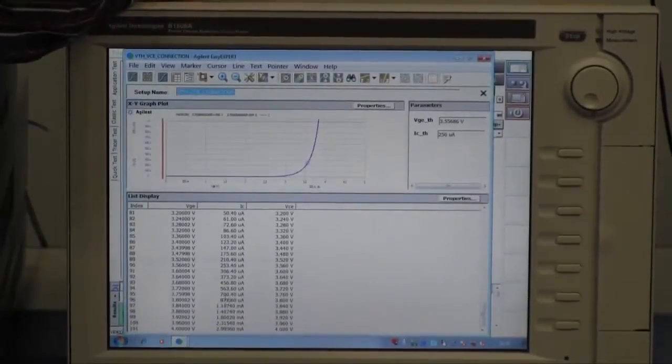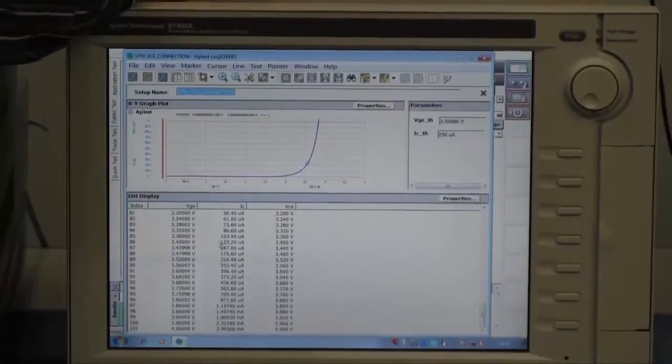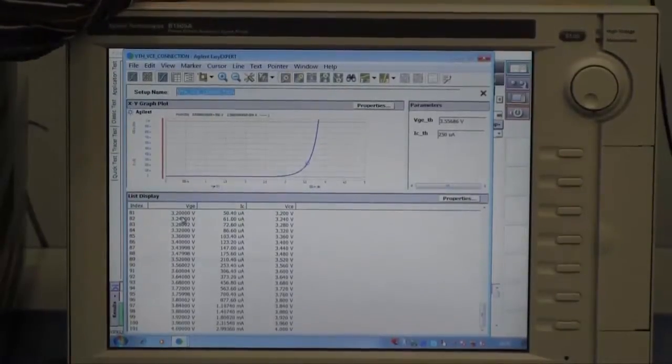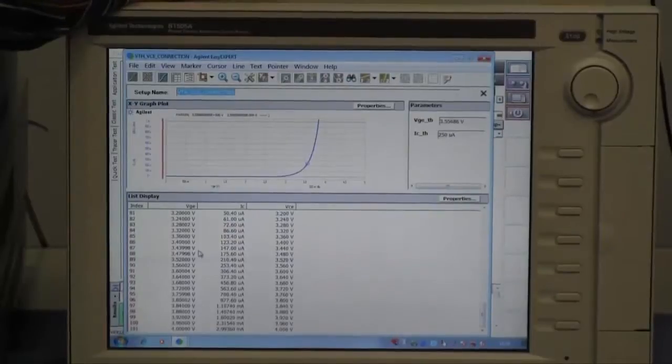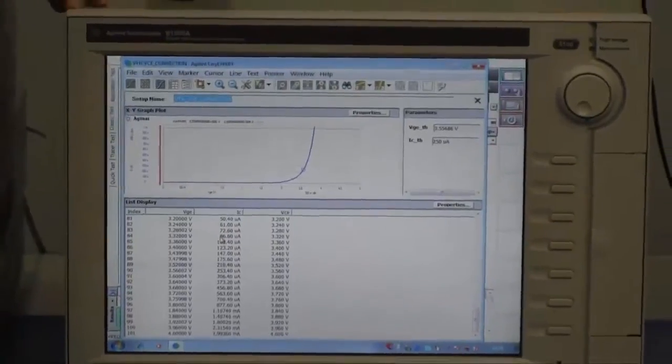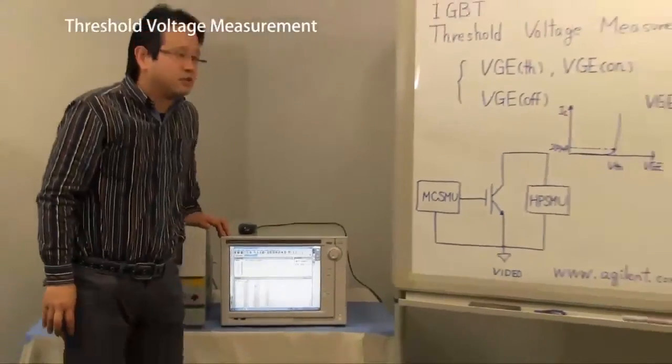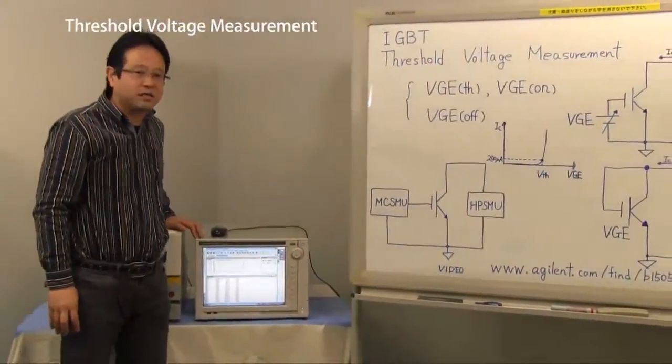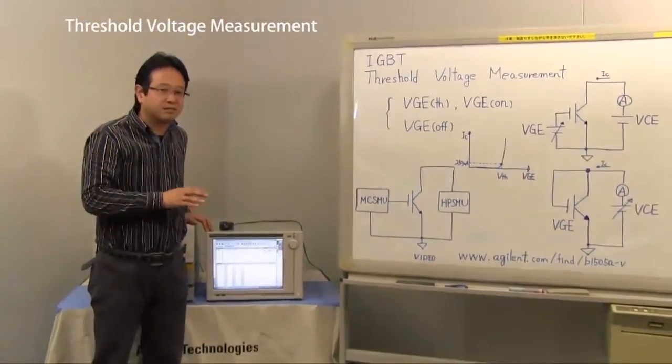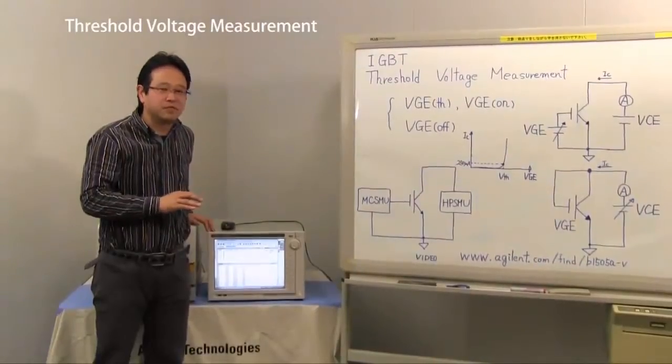Please see the list parameter. VGE and VCE are operated simultaneously. Today I measured the threshold voltage with two measurement definitions. One is VCE constant. The other one is VGE equal to VCE.